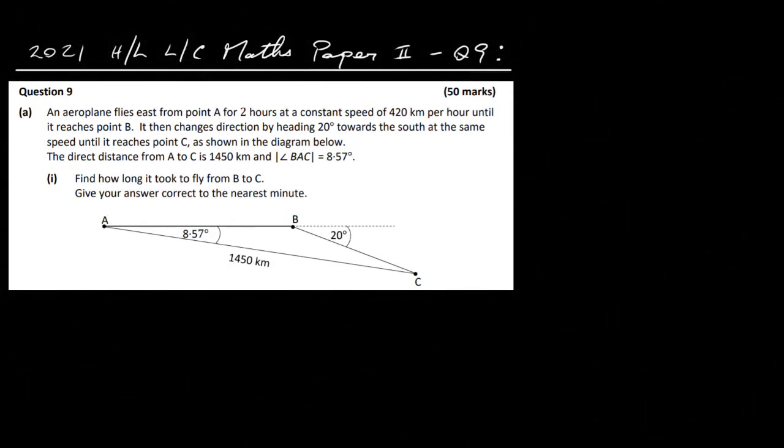In this video I'm going to have a look at the 2021 Higher Level Leaving Cert Maths Paper 2, Question 9. An airplane flies east from the point A for 2 hours at a constant speed of 420 km per hour until it reaches the point B. It then changes direction by heading 20 degrees southward at the same speed until it reaches point C. The direct distance from A to C is 1450 km and the angle BAC is 8.57 degrees. Find how long it took to fly from B to C, giving your answer to the nearest minute.